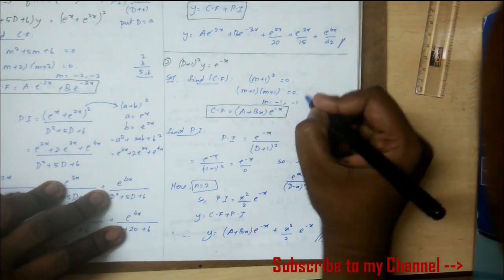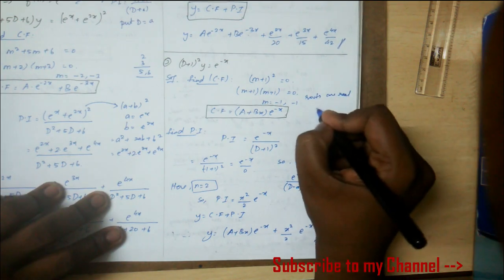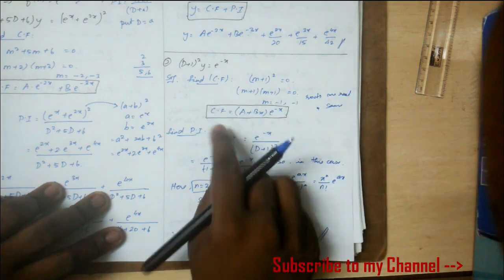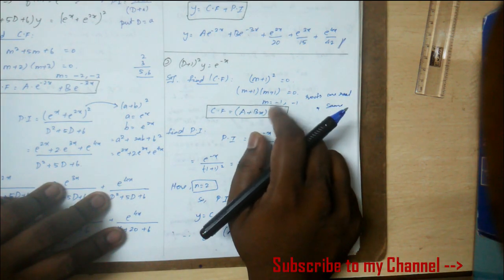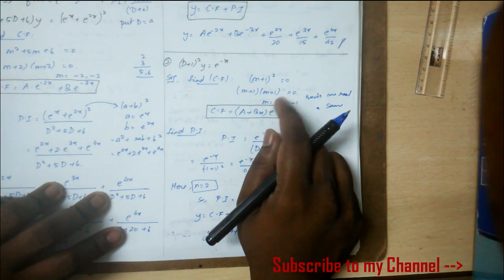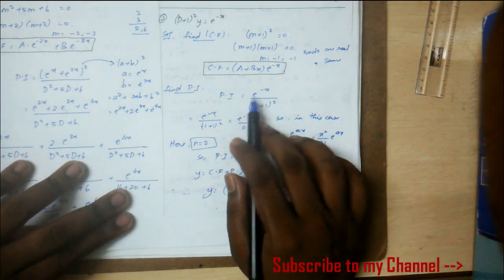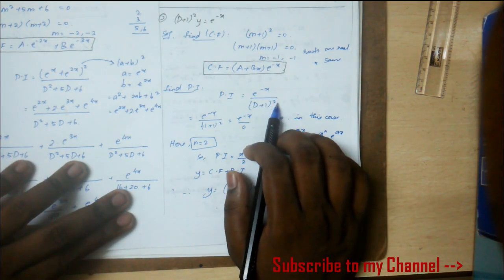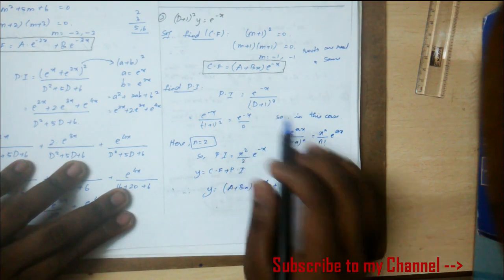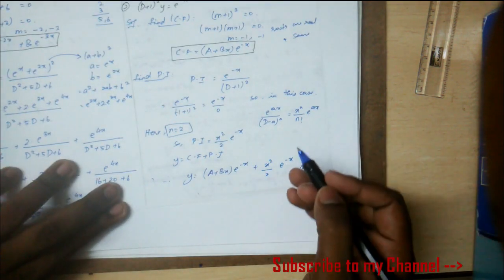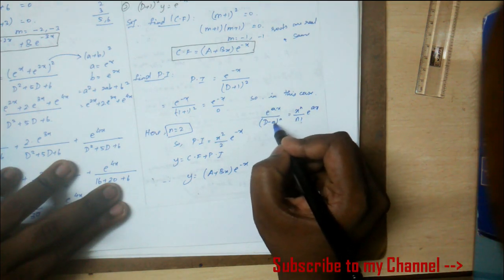The roots are real and equal, so CF = (A + Bx)e^(-x). For PI: f(x)/(D + 1)² where f(x) = e^(-x) will give zero in this case. When you have e^(ax)/(D - a)^n, there's a special formula.